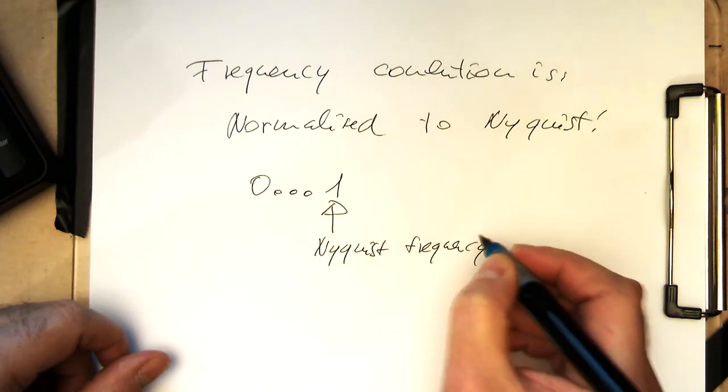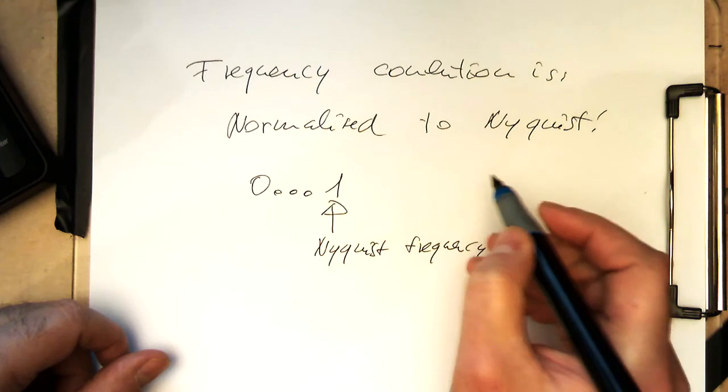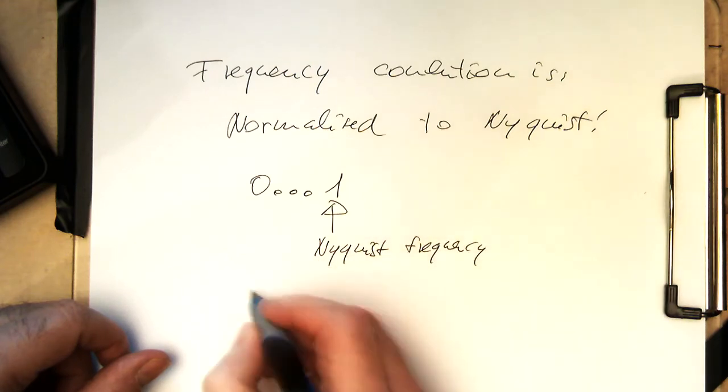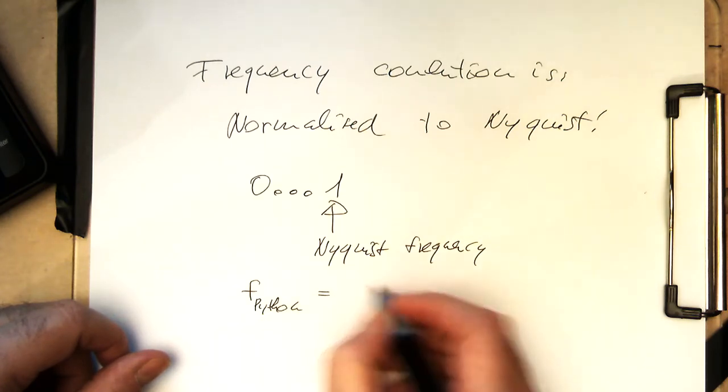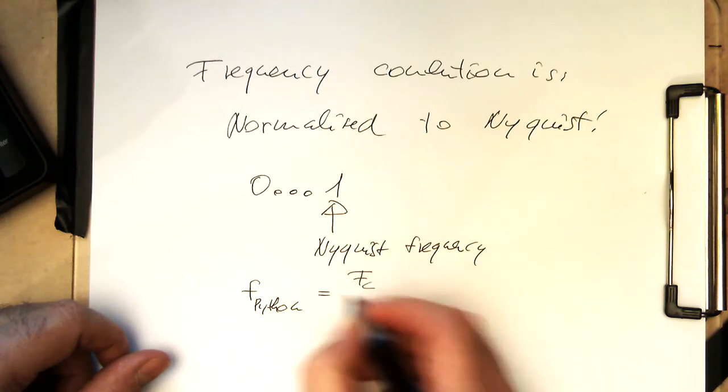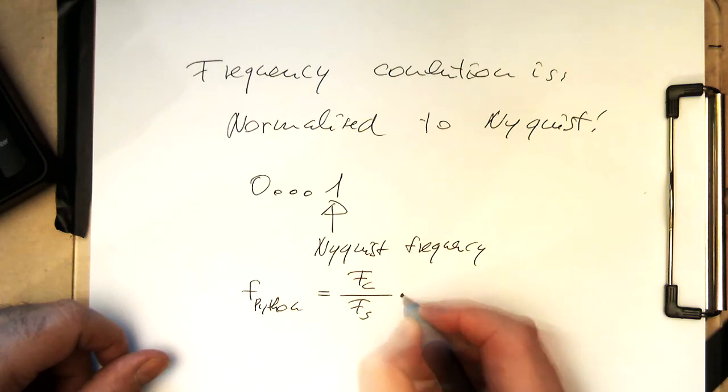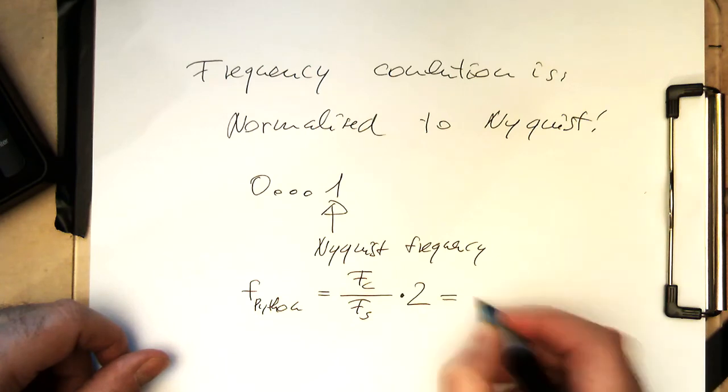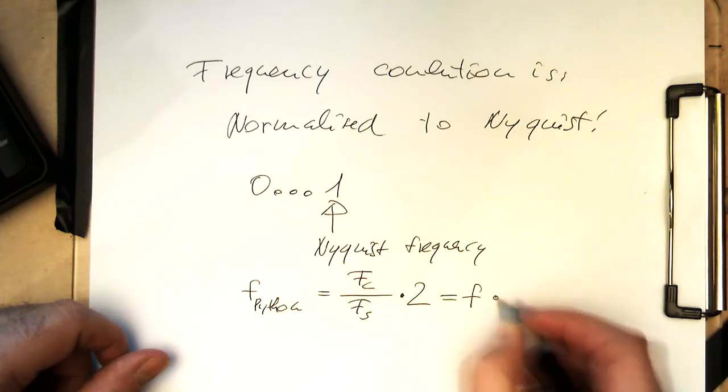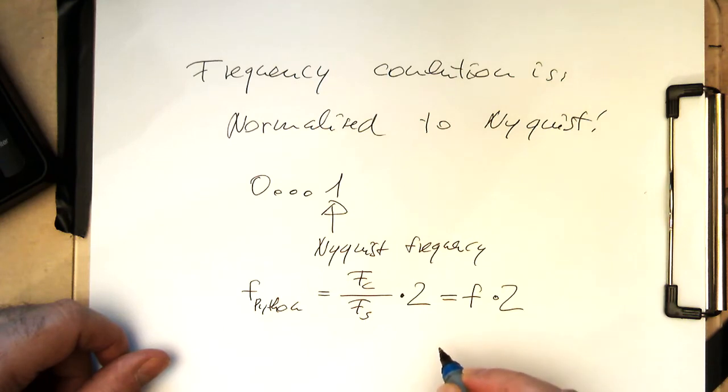This means that this convention, the F_Python, if we think of this here as the analog cutoff divided by the sampling frequency, then this is multiplied by 2. Or also, if we think of our normalized frequencies here, then this is also multiplied by 2. So any command, any high-level filter command, will be using these frequencies here.